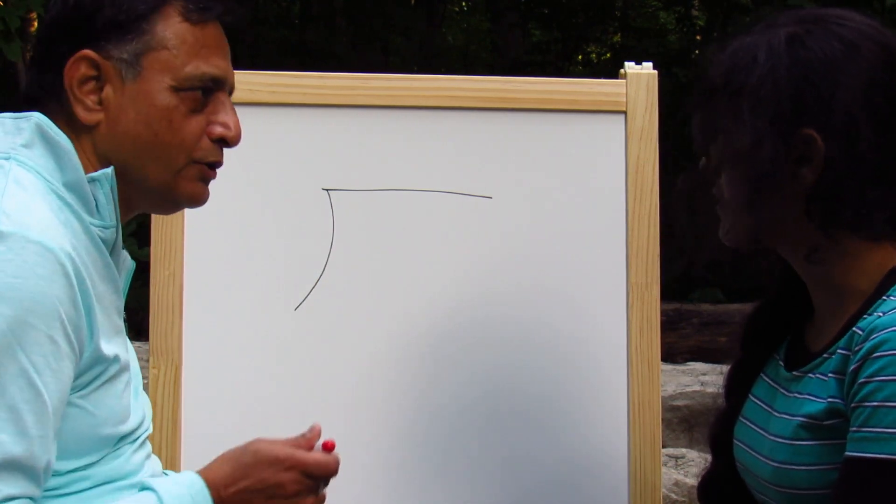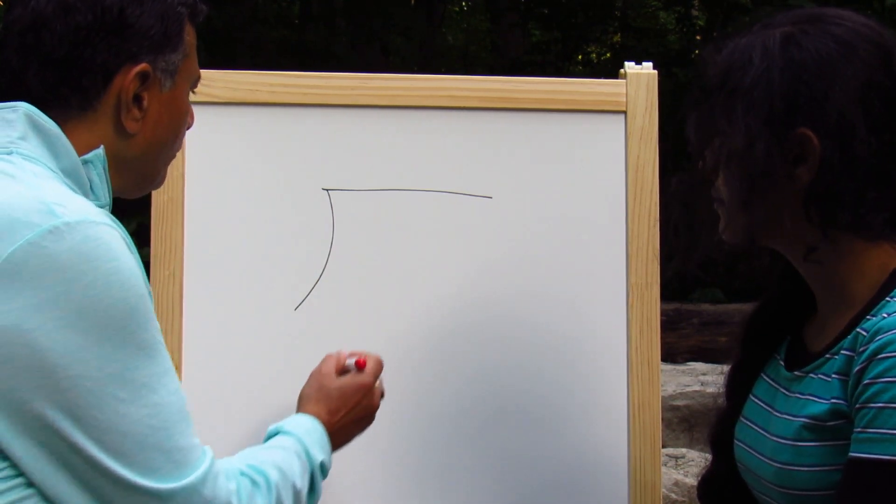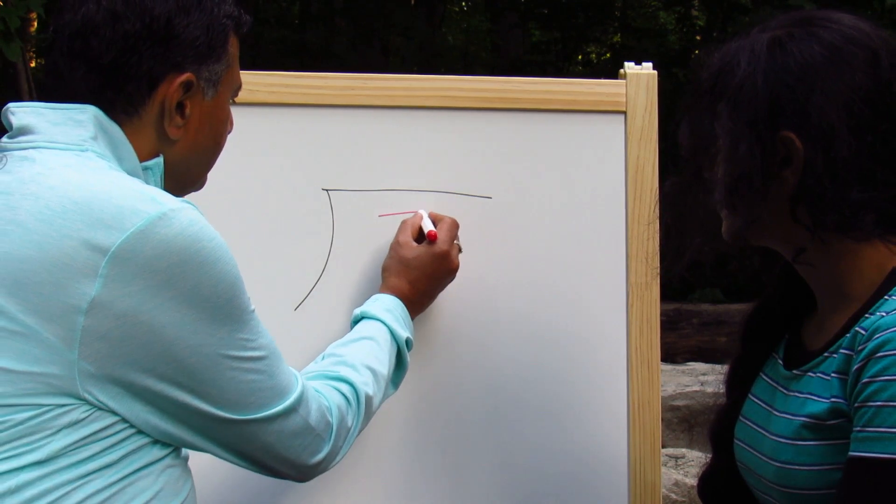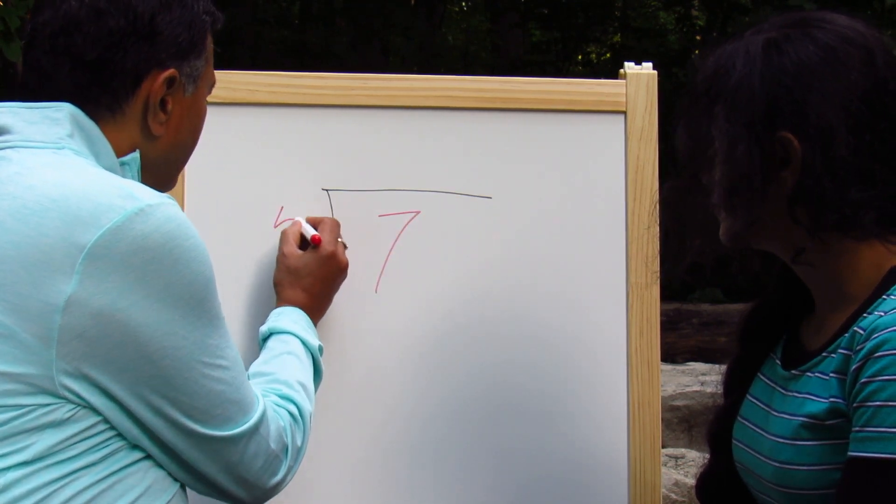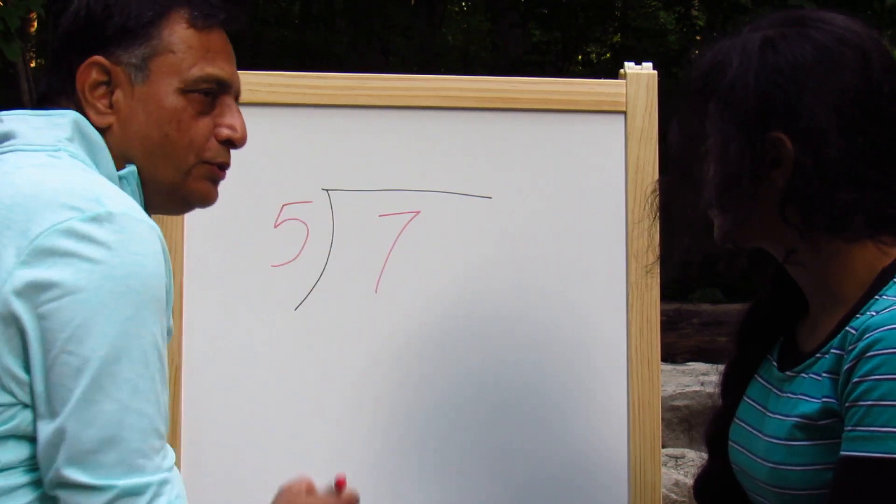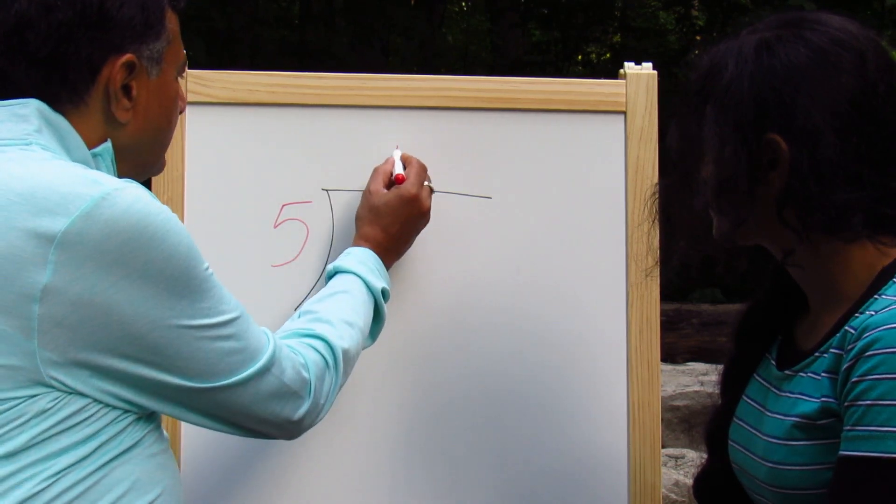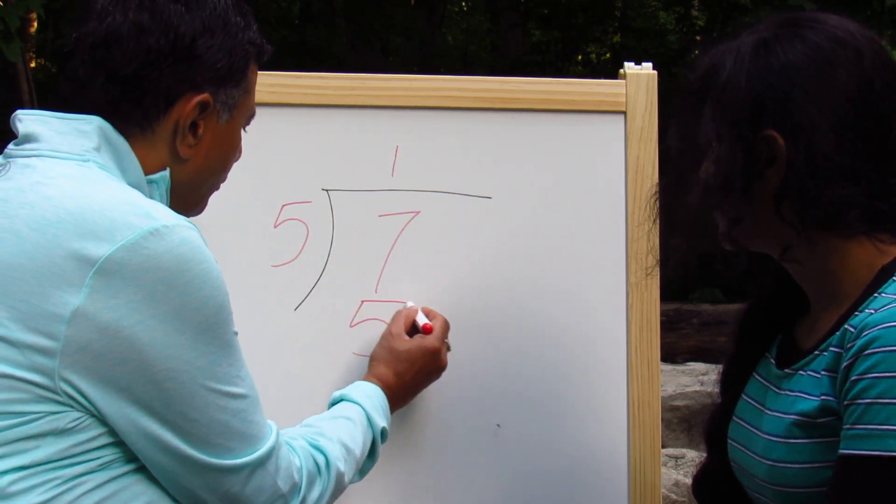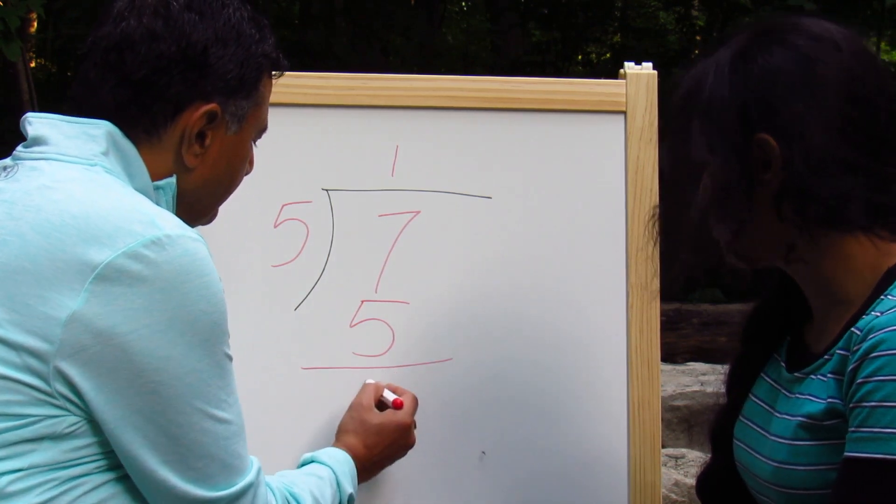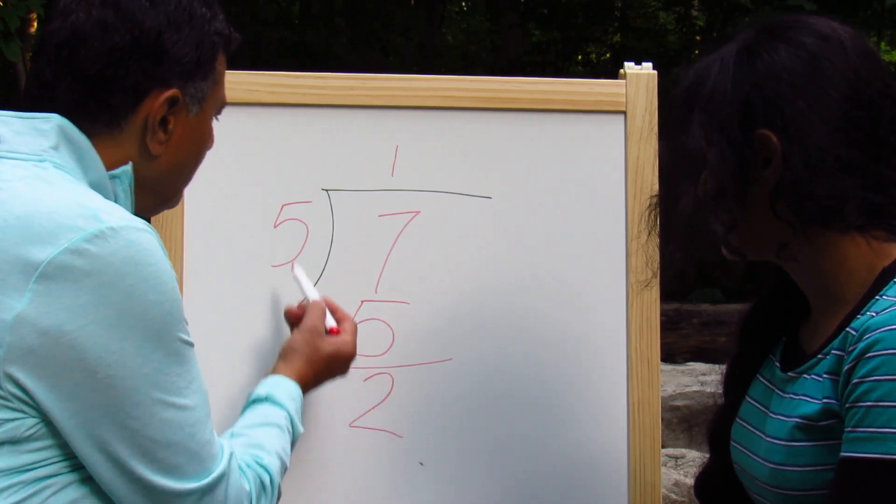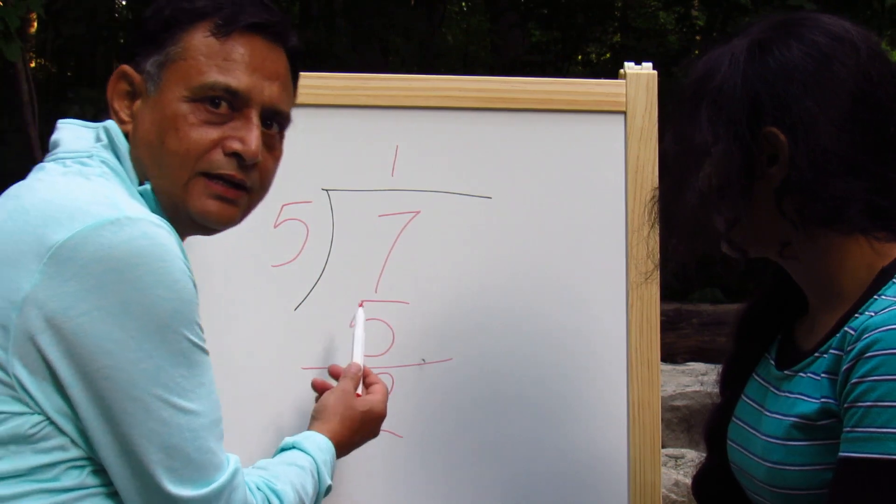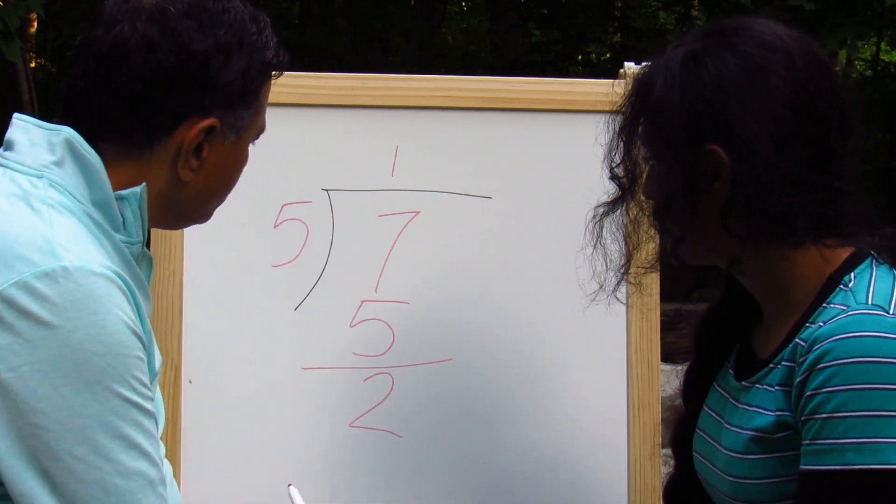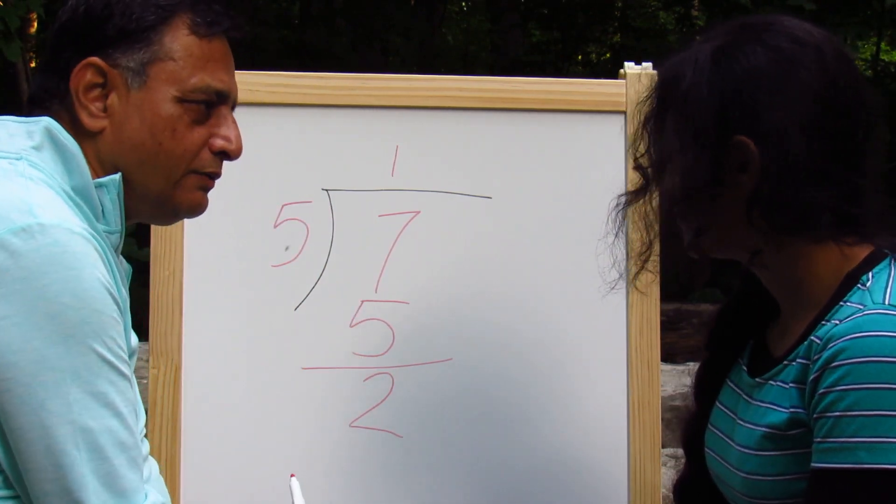That's the symbol of division as you know. And normally what we do is, let's take a simple example. Let's say we divide 7 by 5. So what do you do? 5 goes 1 time into 7, and what you get here is remainder of 2. So 5 times 1 is 5, remainder is 2. So that's your normal division.